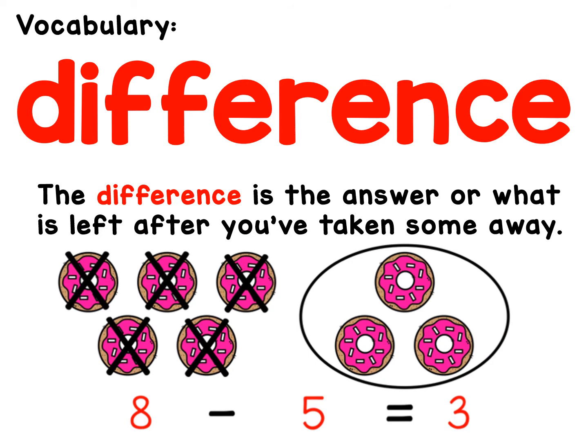In a subtraction sentence, the answer you're getting is called the difference. That is what is left after you've taken some away. So in this number sentence, eight minus five equals three. Three is the difference or the answer.